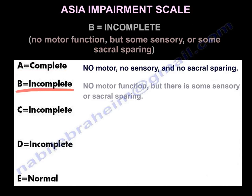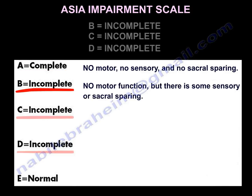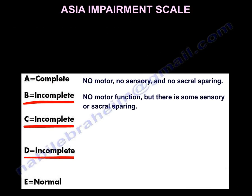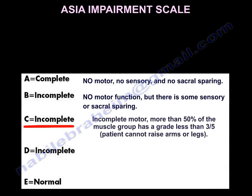Grade B is incomplete — there is no motor function, but there is some sensory or sacral sparing. B, C, and D are all incomplete. With B, you have some sacral sparing and some sensory sparing, but no motor. C is incomplete motor: more than 50% of the muscle groups have a grade less than 3 out of 5.